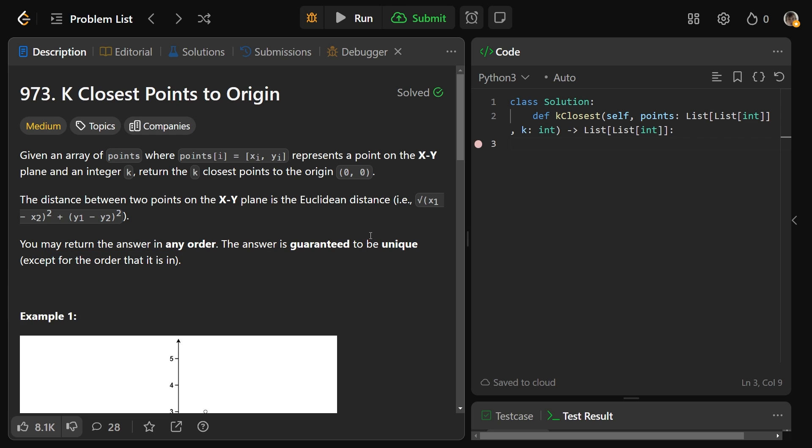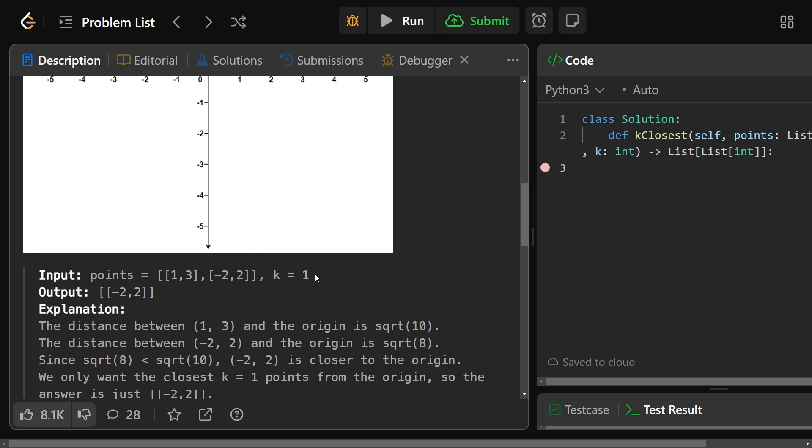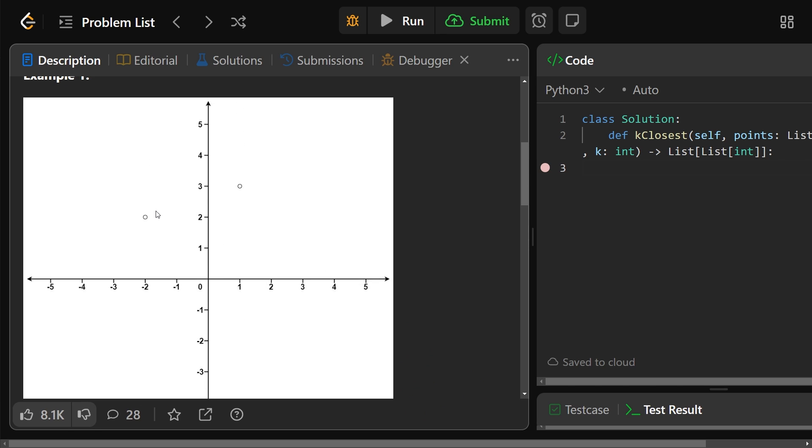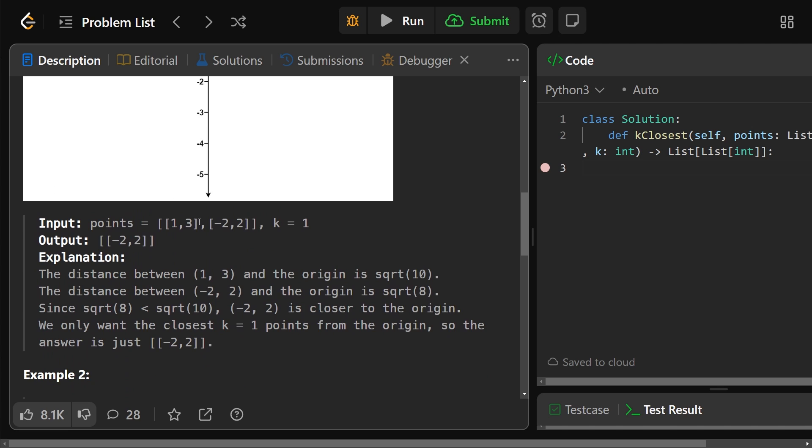Guaranteed to be unique just means that there's not going to be two points that are tied with the same distance. I think this is the worst possible picture they could have made for this, but basically, we have two points here, and we've defined k equals 1. So we want to return the point with the closer distance. Our points, as we see on the graph, are this one is (-2, 2), and the other point is (1, 3). The distance between 1 and 3 and the origin is the square root of 10, and the distance between (-2, 2) and the origin is square root of 8. And so obviously, you'd prefer the square root of 8. We only want the closest k equals 1 point, so that's simply the answer.